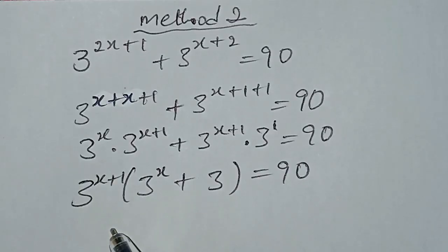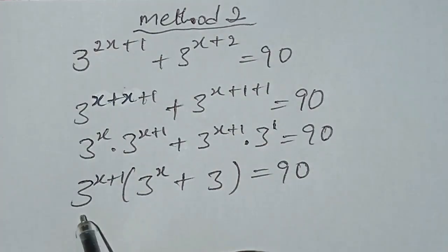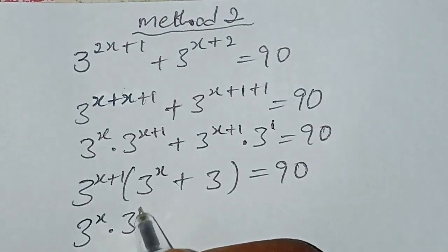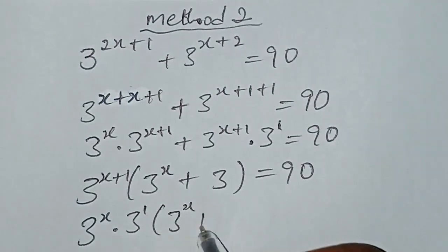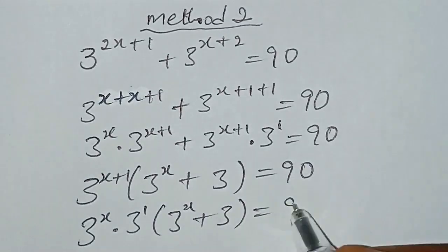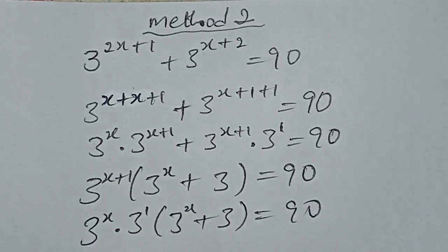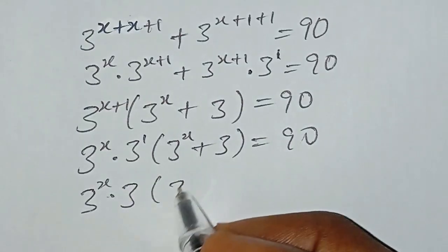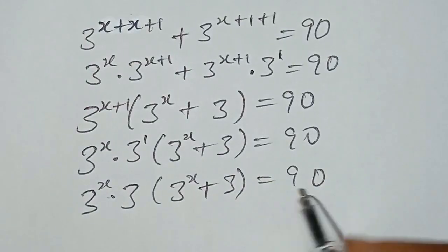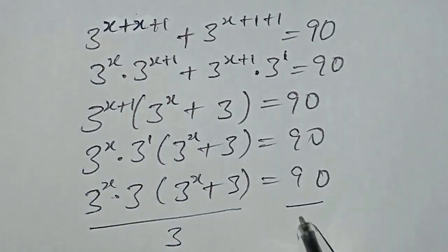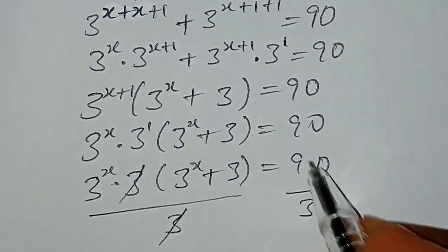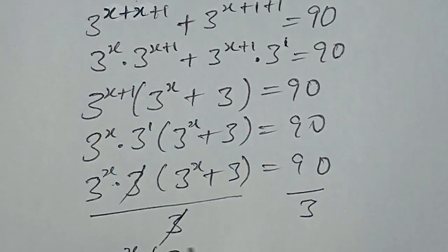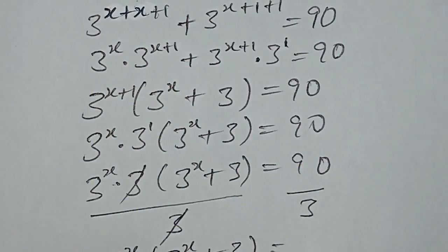This can be written as 3 to the power of X multiplied by 3, into bracket 3 to the power of X plus 3, equal to 90. We divide both sides by 3, giving us 3 to the power of X into bracket 3 to the power of X plus 3, equal to 30.